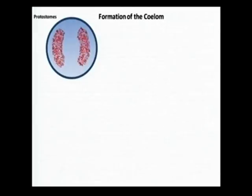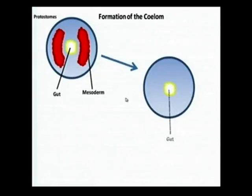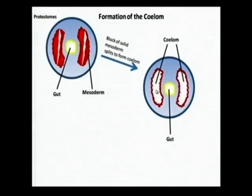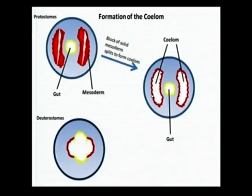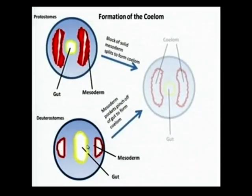I want to show a video of how the enteroselomates and schizoselomates develop. The coelom forms from the mesoderm, and then the gut forms. Here you can observe the gut and the splitting of the coelom — this space is called the coelom. In deuterostomes, the mesodermal sacs evaginate into the wall of the archenteron and fuse with one another to form the enteroselomates.